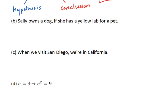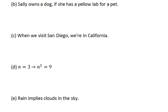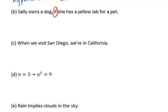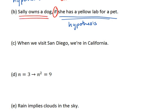Let's look at the next example: 'Sally owns a dog if she has a yellow lab for a pet.' This 'if' should be a dead giveaway. Everything that follows the 'if' is the hypothesis, and everything else is our conclusion. The statement is saying that if Sally has a yellow lab for a pet, then she owns a dog. Is this true? If Sally does own a yellow lab, does this mean she owns a dog? And the answer is yes, so the statement is true.